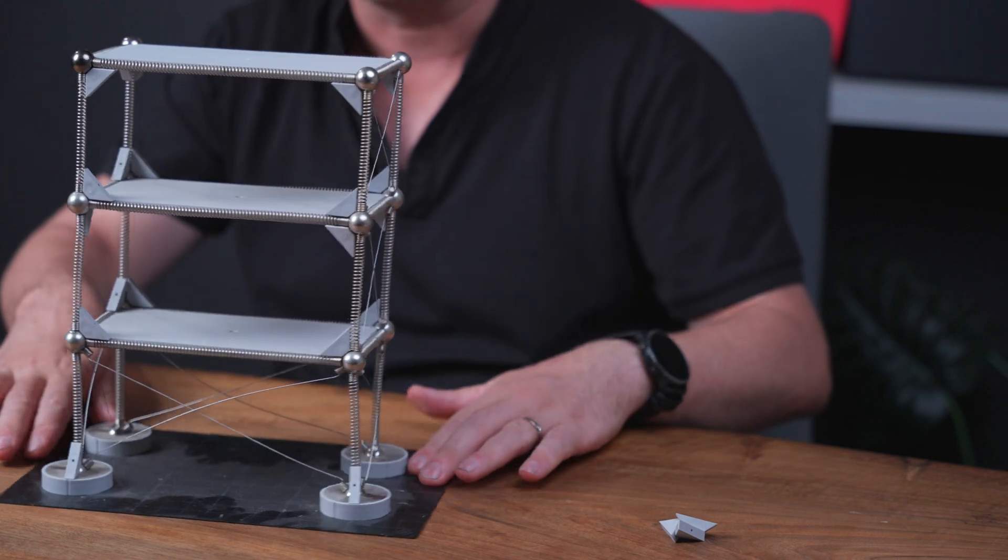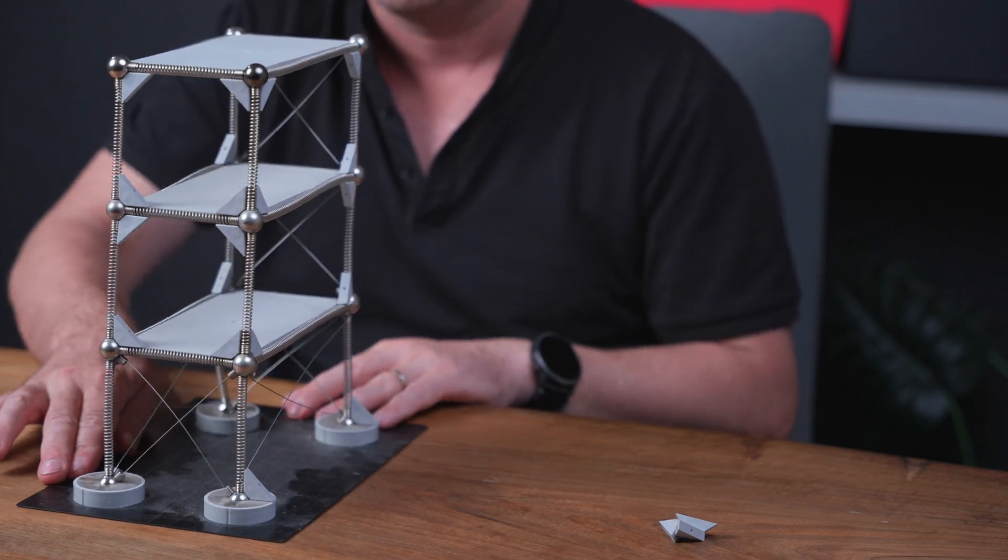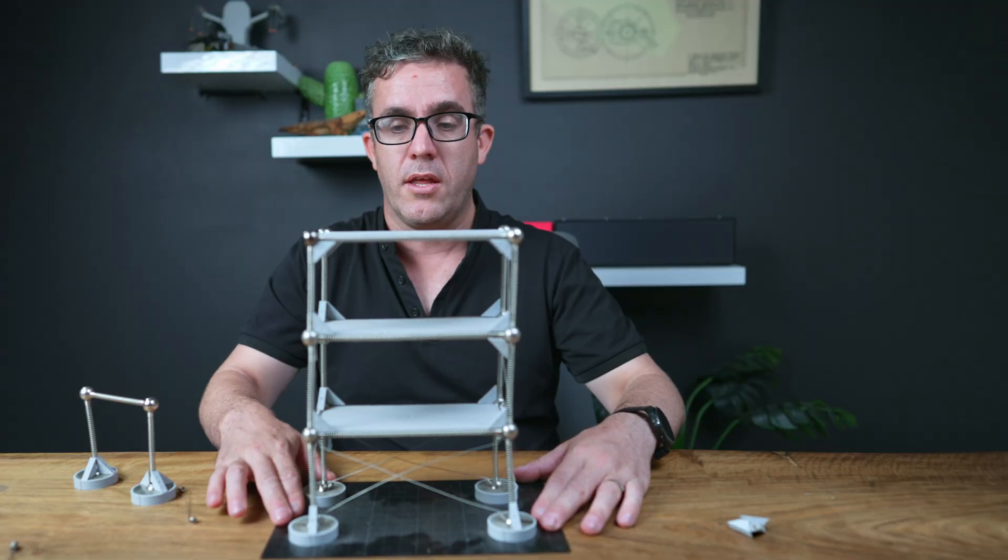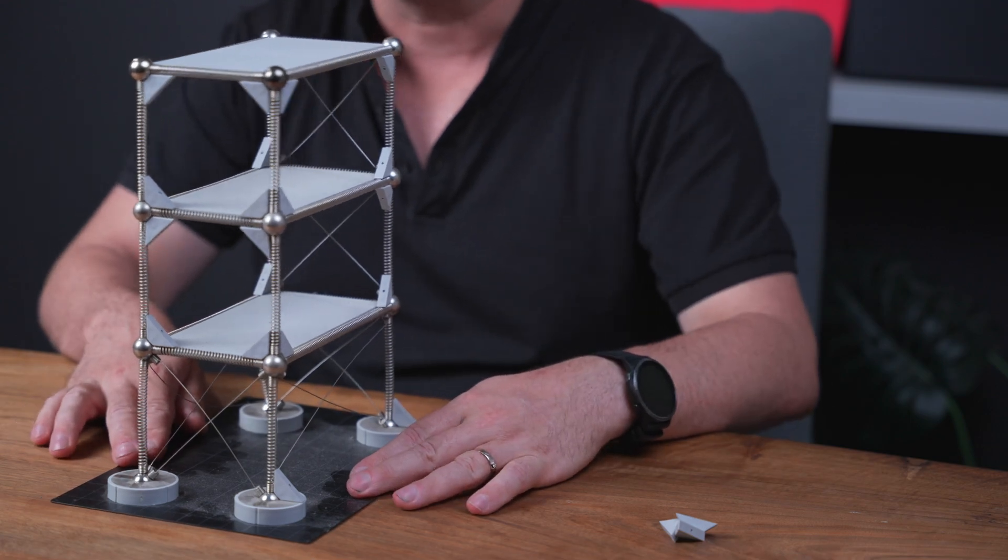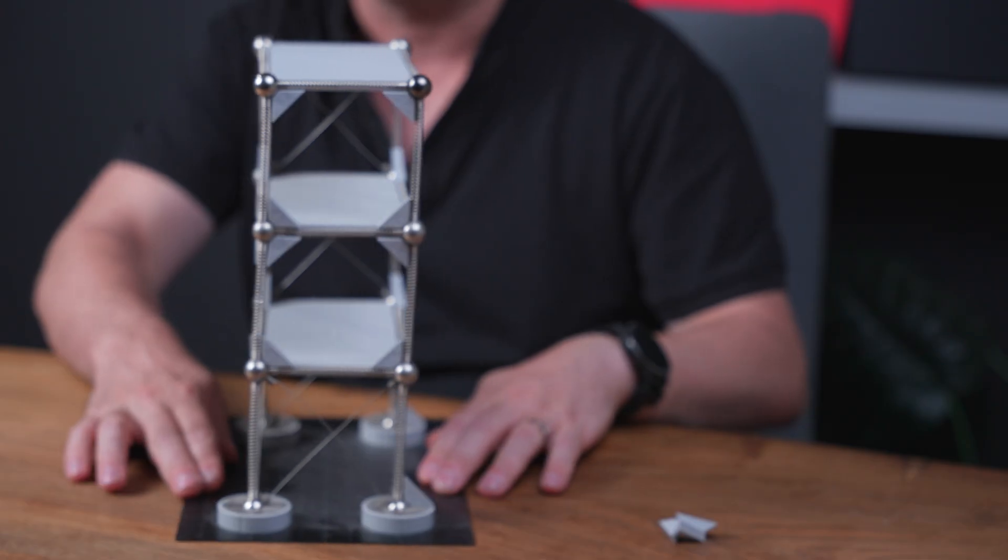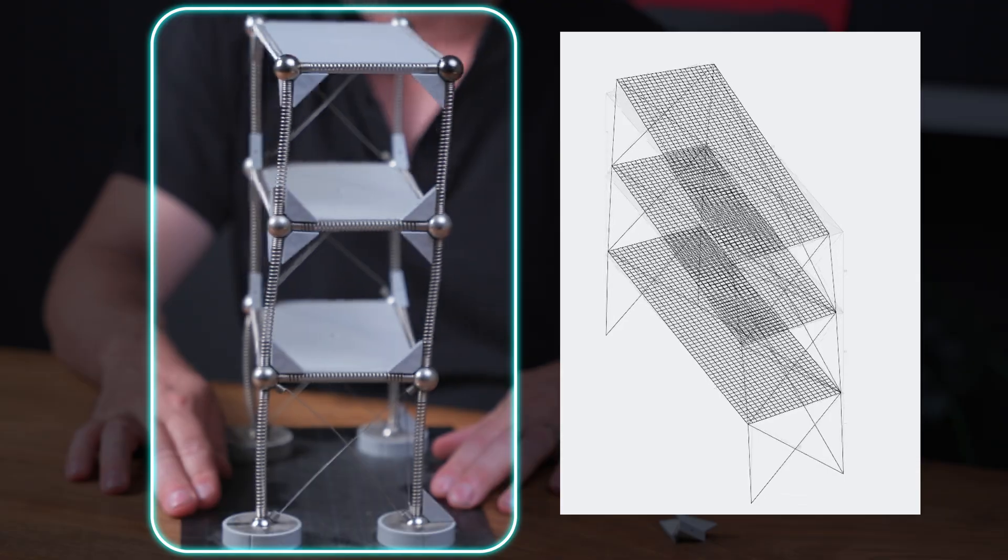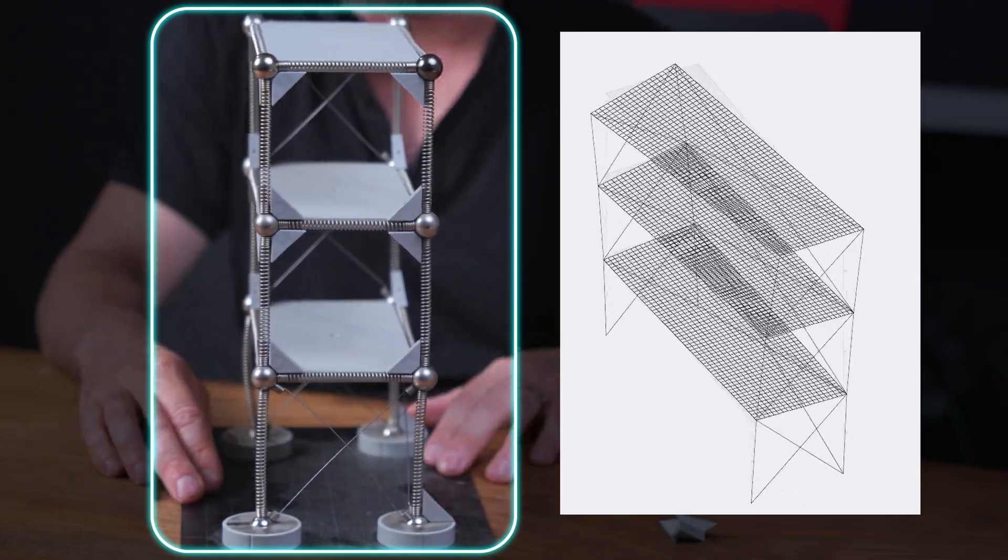It rocks backwards and forwards. You can see it just rocks backwards and forwards. If we do the other direction, you see there is no outer plane forces. But in the weak direction, you can see that the outer plane forces behavior as the system shakes backwards and forwards. That's the type of behavior that we want to try and avoid.